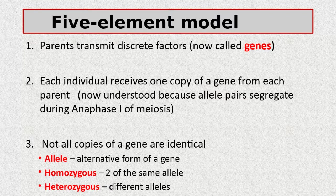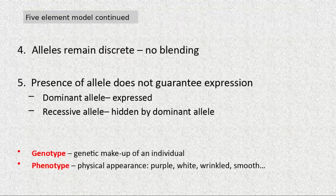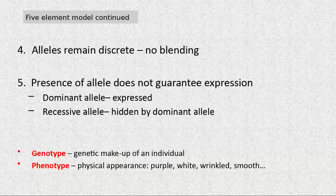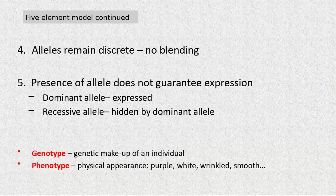We also came up with the concepts of genotype and phenotype. Genotype is the genetic makeup of an individual. The phenotype — for example, the seeds are yellow — is either big Y, big Y (homozygous) or big Y, small y (heterozygous); both give the yellow phenotype.